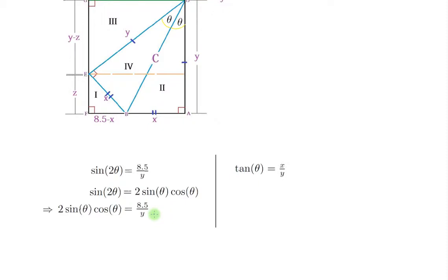Now I'm going to use this fact and another interesting fact. What is the tangent of theta? Well, the tangent of theta — concentrating on the big triangle — is opposite, which is X, over adjacent, which is Y. But that is the adjacent of the old triangle, not the new one. So tangent of theta equals X over Y, and this is what we're going to use to find the minimum crease.